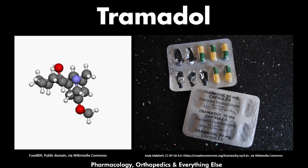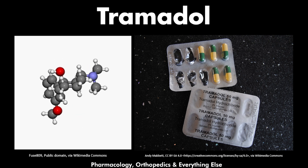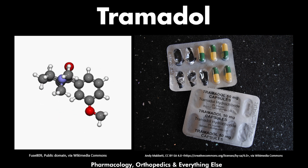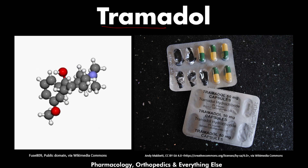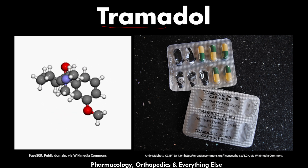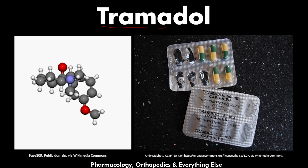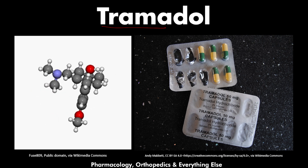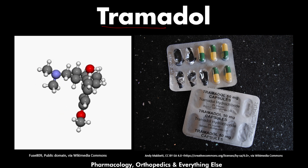Hello and welcome back to the central nervous system pharmacology masterclass, where we talk about all the medications that work on the central nervous system. Here we will talk about tramadol, which is a synthetic opioid medication. We will explain the pharmacokinetics, mechanism of action, therapeutic uses, adverse effects, and contraindications of this medication. You can always use the chapters in the video description to skip to other parts of this video.